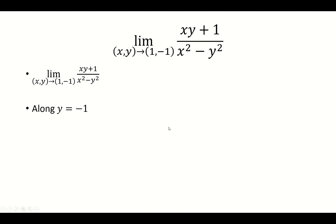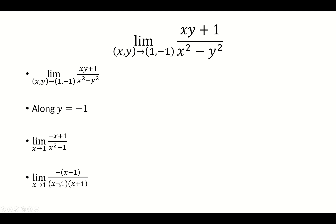Let's first take the path along y = -1. Substitute y = -1, and now we're letting x approach 1. We can factor the denominator into (x - 1)(x + 1). Then I also factor the numerator — I factor out the negative, and I'm left with (x - 1). Now the (x - 1)'s cancel, and I'm left with -1 over (x + 1), so the limit is going to be -1/2.